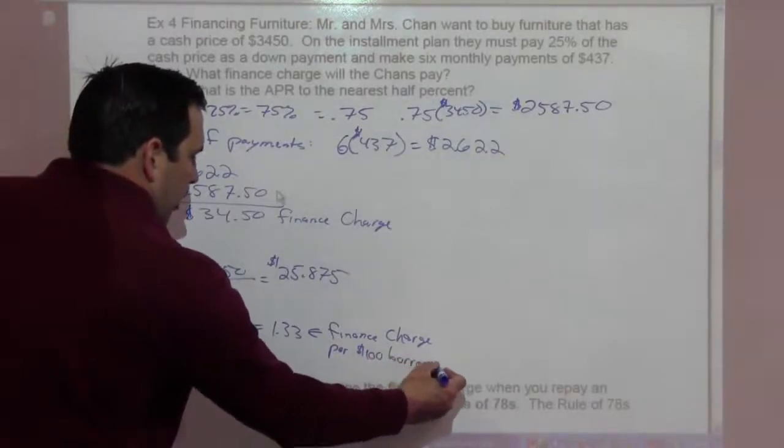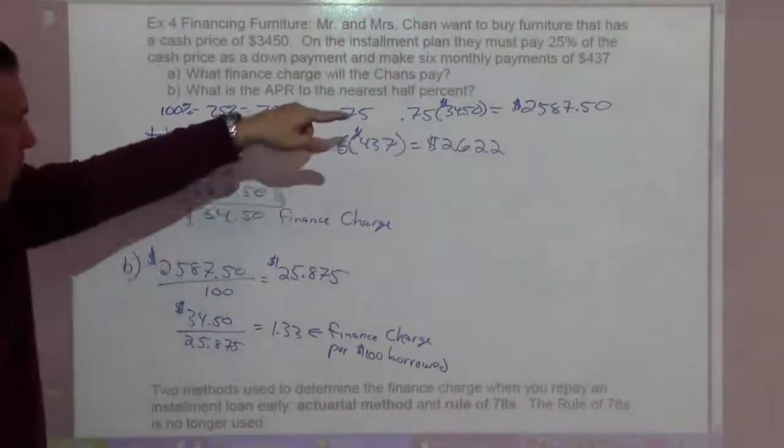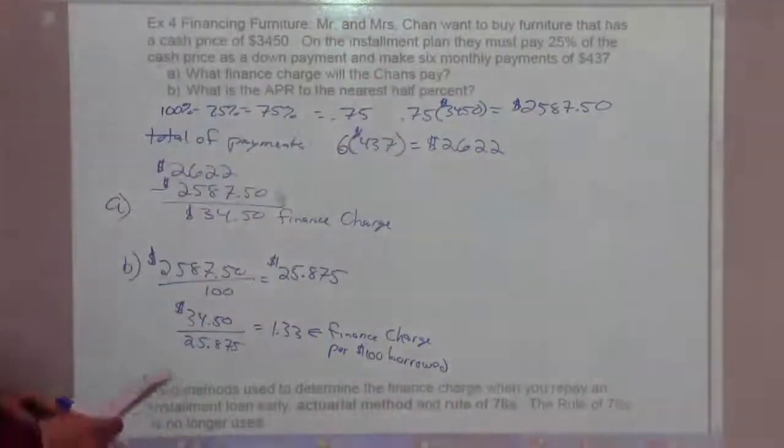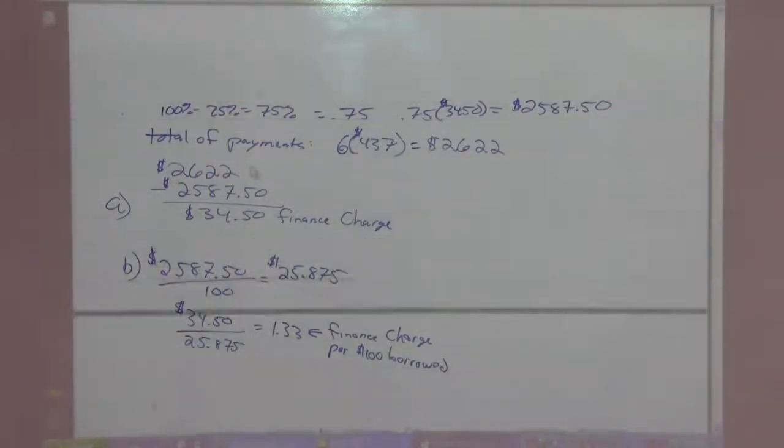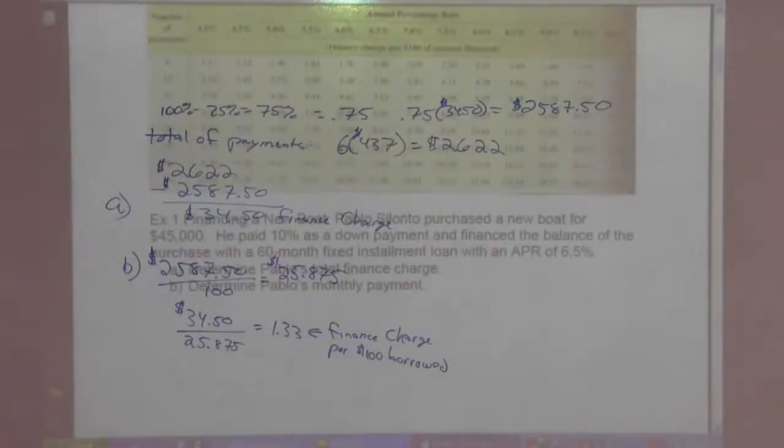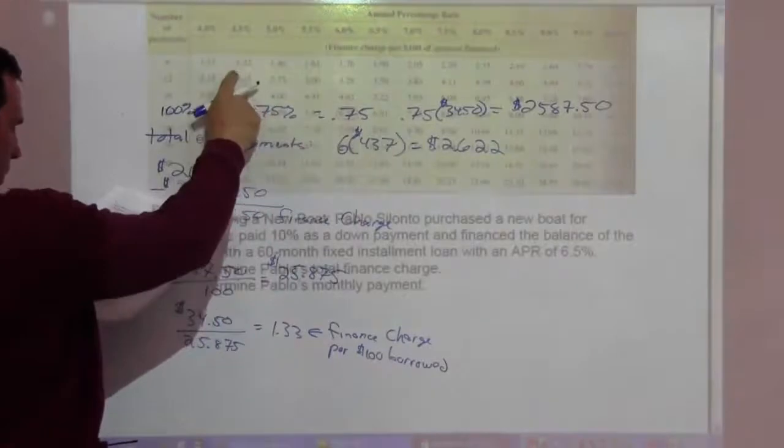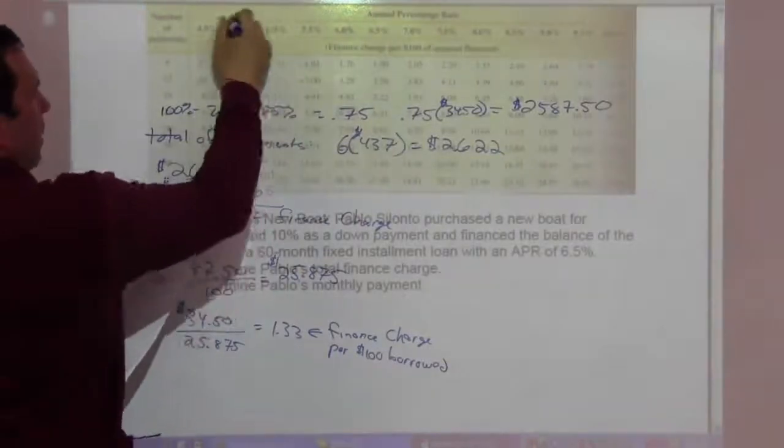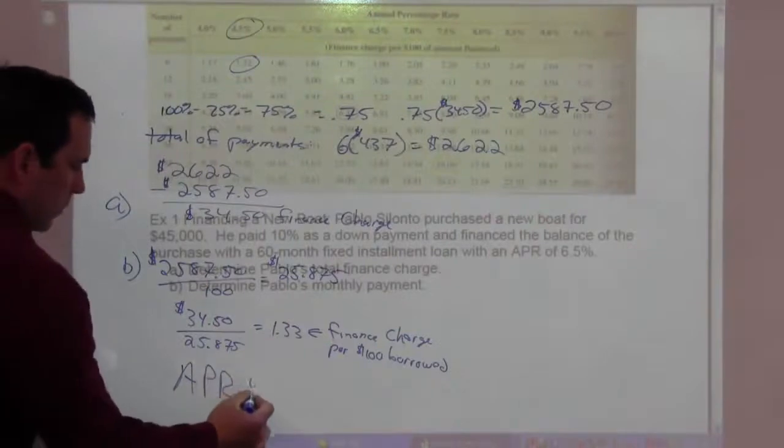This number we'll look up on the chart under the six month row. Okay, we'll probably leave this all up here. Six months, $1.33, the closest we get is $1.32 and it's 4.5%.